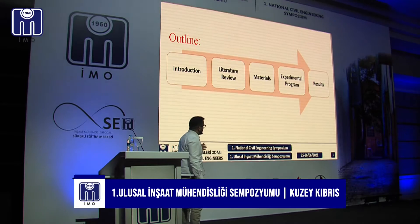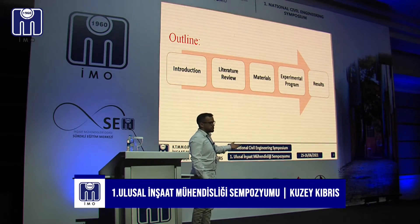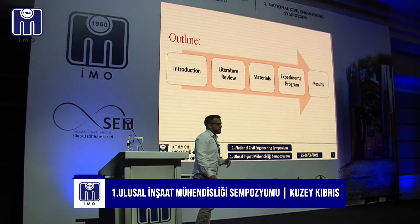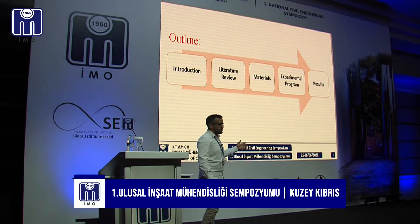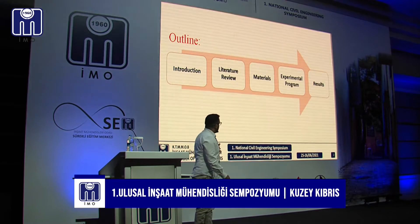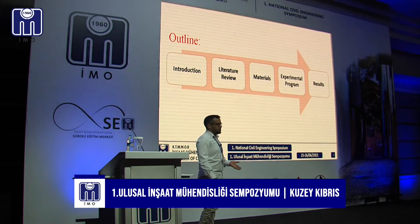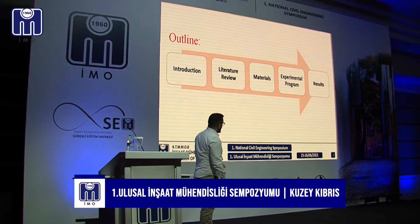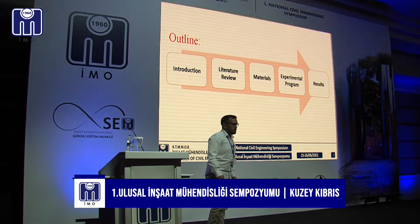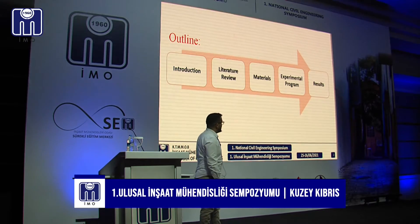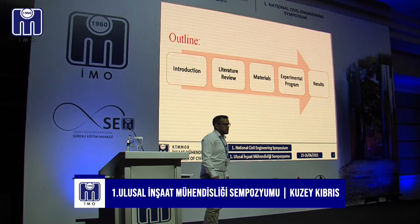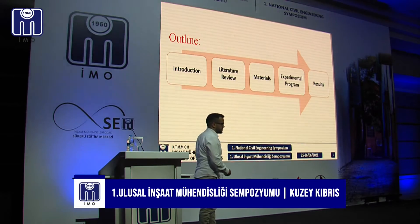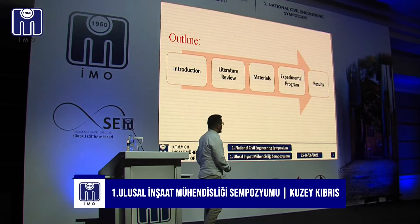My outline will be as follows. I will start with some introduction and the motivations of my research, then go to a literature review. Then I will cover the materials I used, introduce the experimental program I conducted in the lab, and conclude with some initial results from my research.